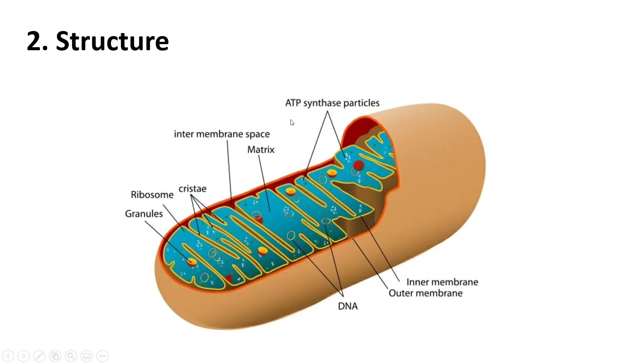Now is the structure of the mitochondria. First of all, we have the outer membrane. It's the part that interacts with the cytoplasm in the rest of the cell. Next we have, right here, the inner membrane.